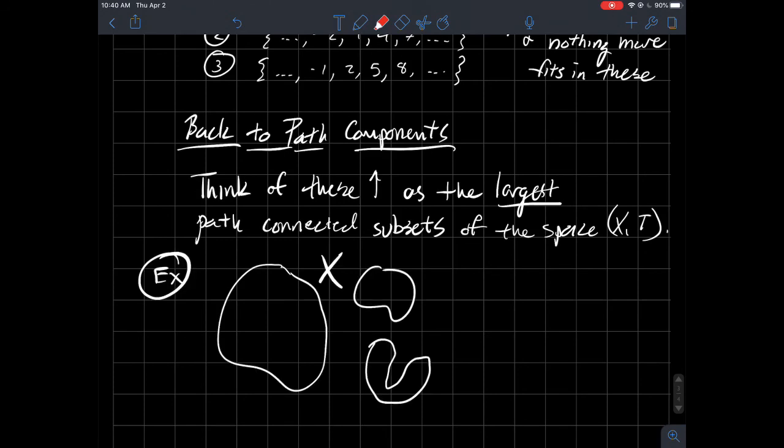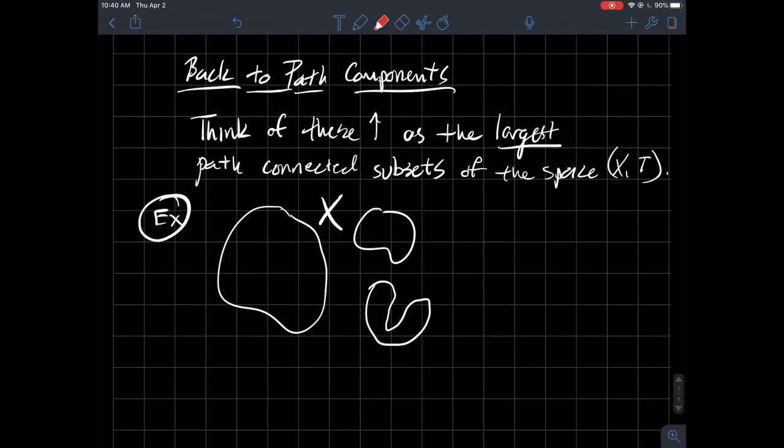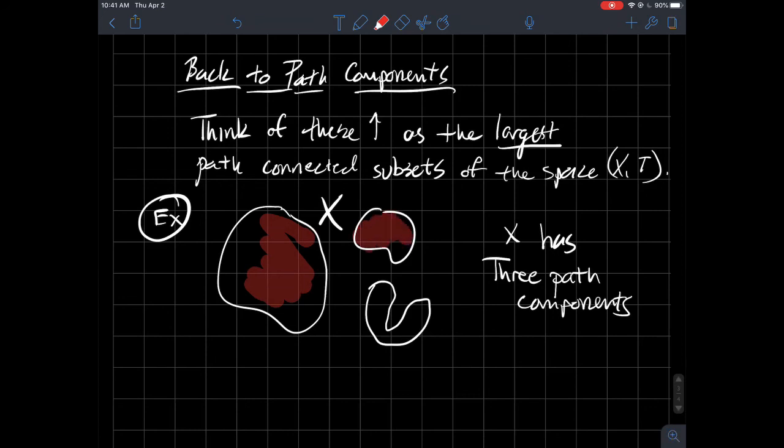So to give you a picture, it should be kind of intuitive. Let's say my space consists of these three pieces here. What are the path components? Well, each one of those things individually looks path-connected. So X has three path components. So the components are just what are the biggest path-connected spaces or path-connected subsets of your set? What are the largest path-connected subsets of your set?